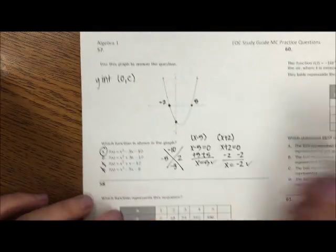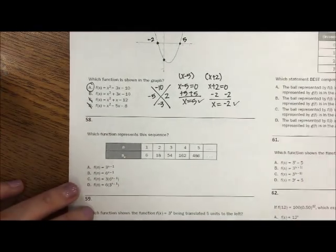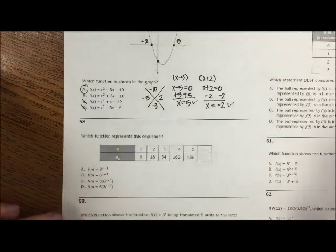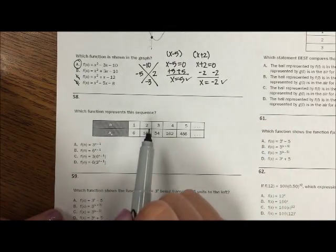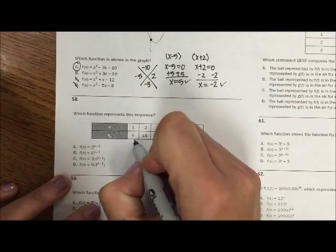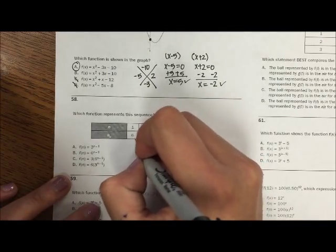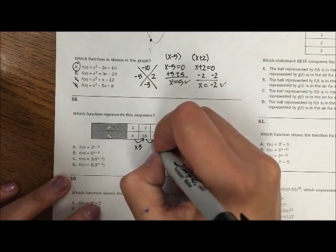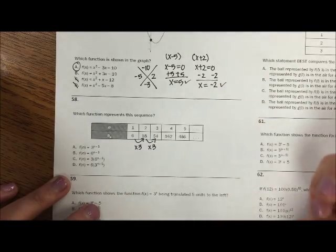So first off, we can see that A is our option. Okay, let's look at 58. Which function represents the sequence? Let's look at the sequence. So to get from 6 to 18, I multiply by 3. To get from 18 to 54, I'm also multiplying by 3.